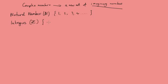The integers are all the numbers: negative numbers, zero, 1, 2, 3, and so forth — all the numbers that we count things with.